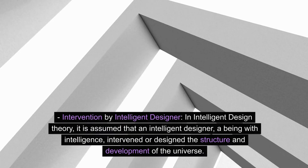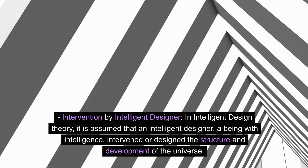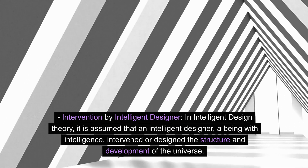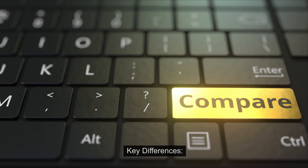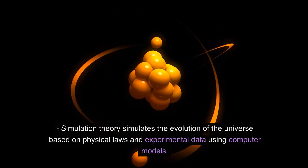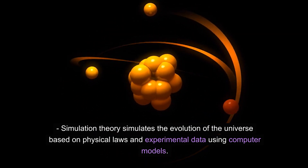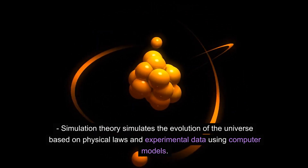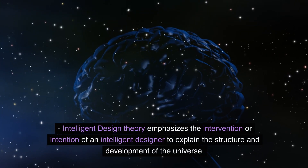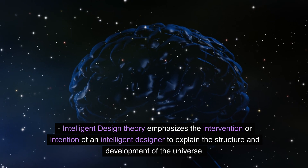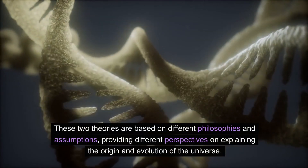Intervention by intelligent designer: In intelligent design theory, it is assumed that an intelligent designer — a being with intelligence — intervened or designed the structure and development of the universe. Key differences: Simulation theory simulates the evolution of the universe based on physical laws and experimental data using computer models, while intelligent design theory emphasizes the intervention or intention of an intelligent designer. These two theories are based on different philosophies and assumptions, providing different perspectives on explaining the origin and evolution of the universe.